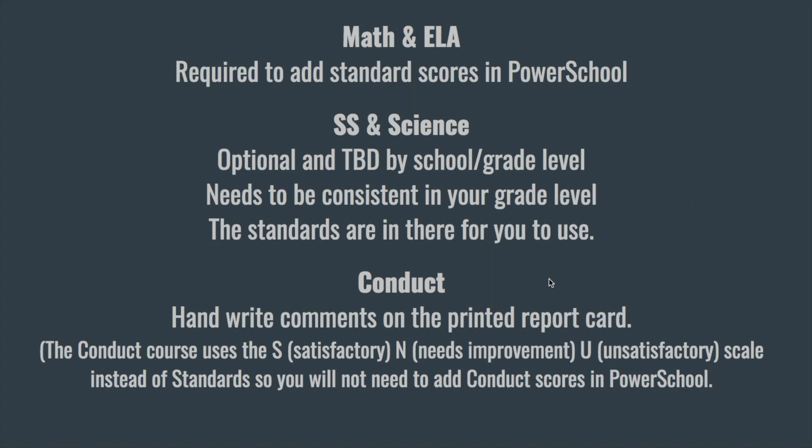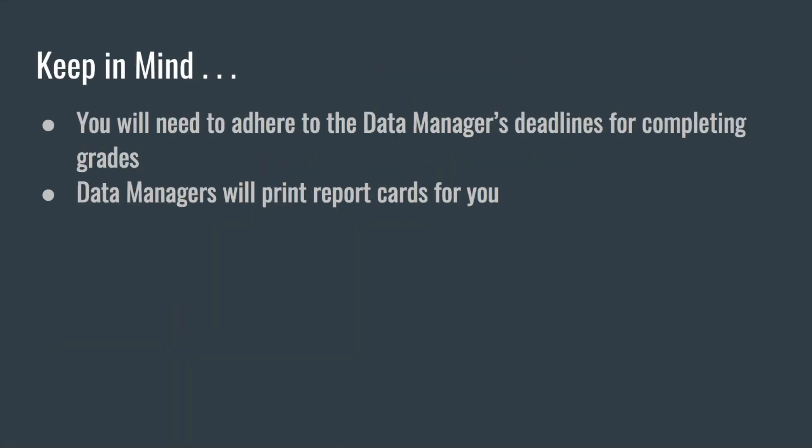For conduct, we think it's best if you just handwrite comments on the printed report card. There is a conduct course in PowerSchool, but it uses S for satisfactory, N for needs improvement, and U for unsatisfactory — instead of the standards M, P, and N scale. We don't want to confuse you with a different scale, so you do not have to add conduct scores into PowerSchool.